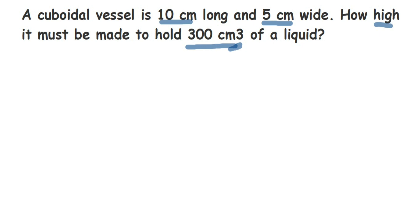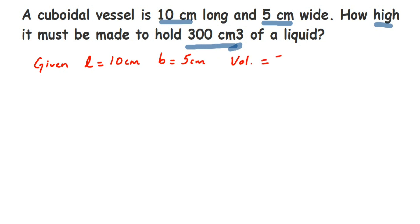So what is given: length is equal to 10 centimeter, breadth is 5 centimeter, and volume of the cuboid is 300 centimeter cube. What we have to find out is the height. Using only length and breadth we cannot find the height, so we have to use the volume to find it.